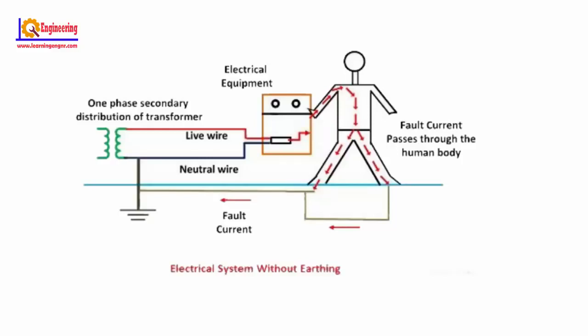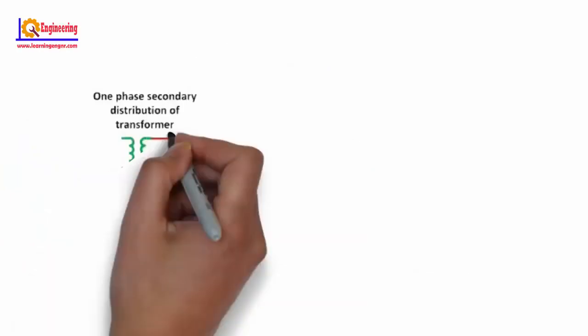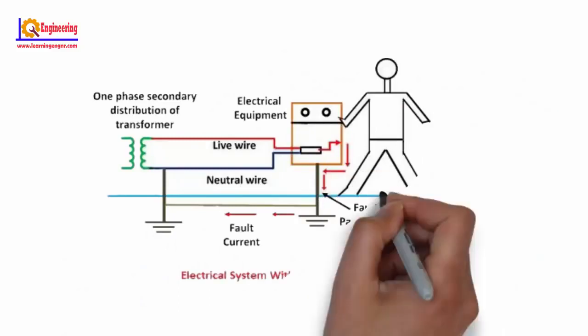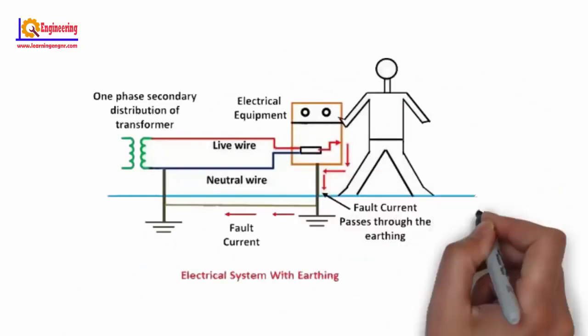provides a proper earthing connection and the fault occurs, the fault current from the equipment flows through the earthing system to the earth, and thereby protects the equipment from the fault current. You do not get a shock and you are safe.